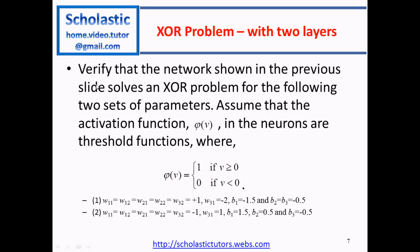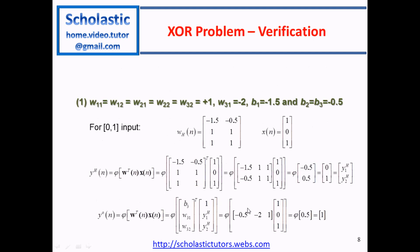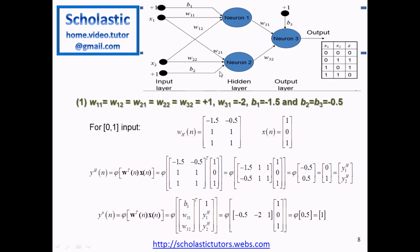The problem is: verify that the network shown in the previous slide solves the XOR problem for two sets of parameters. Assume the activation function phi(v) is a threshold function: phi(v) equals 1 if v is greater than or equal to 0, and equals 0 if v is less than 0. Weights and bias values are given, and we are asked to show they are correct. In this particular lesson, the bias and weights are given, so we are going to verify that these are correct. The output vector Z corresponds to inputs X1 and X2.